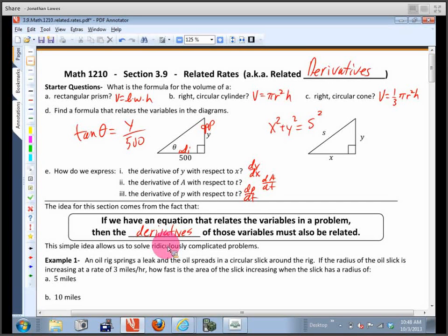That's a pretty simple idea, right? I mean, implicit differentiation wasn't that bad. But that's what we're after. Come up with an equation that relates the variables, and then we're going to find an equation that relates the derivatives, and then we're going to find some unknown quantities.